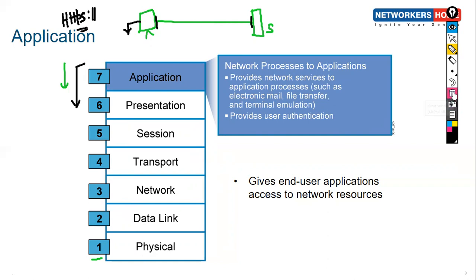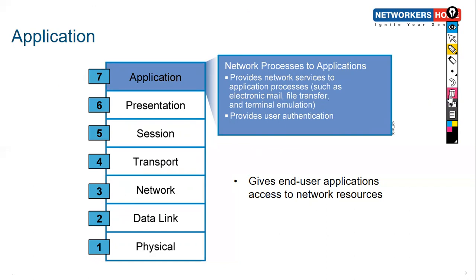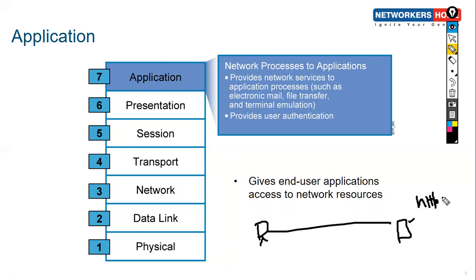The Application layer is a kind of abstraction layer that specifies the shared communication protocols and interface methods used by hosts in a communication. For example, if a server is hosting an HTTPS service, we need an interface — a protocol like HTTP, HTTPS, Telnet, or FTP — to communicate with the server.